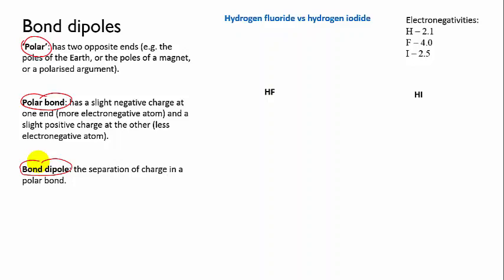For hydrogen fluoride, which is made of a hydrogen and a fluorine atom, the difference in electronegativity will be 1.9, and for hydrogen iodide it's 0.4. You can see that both bonds are polar because there's a difference in electronegativity, but the HF bond is more polar than the HI bond.